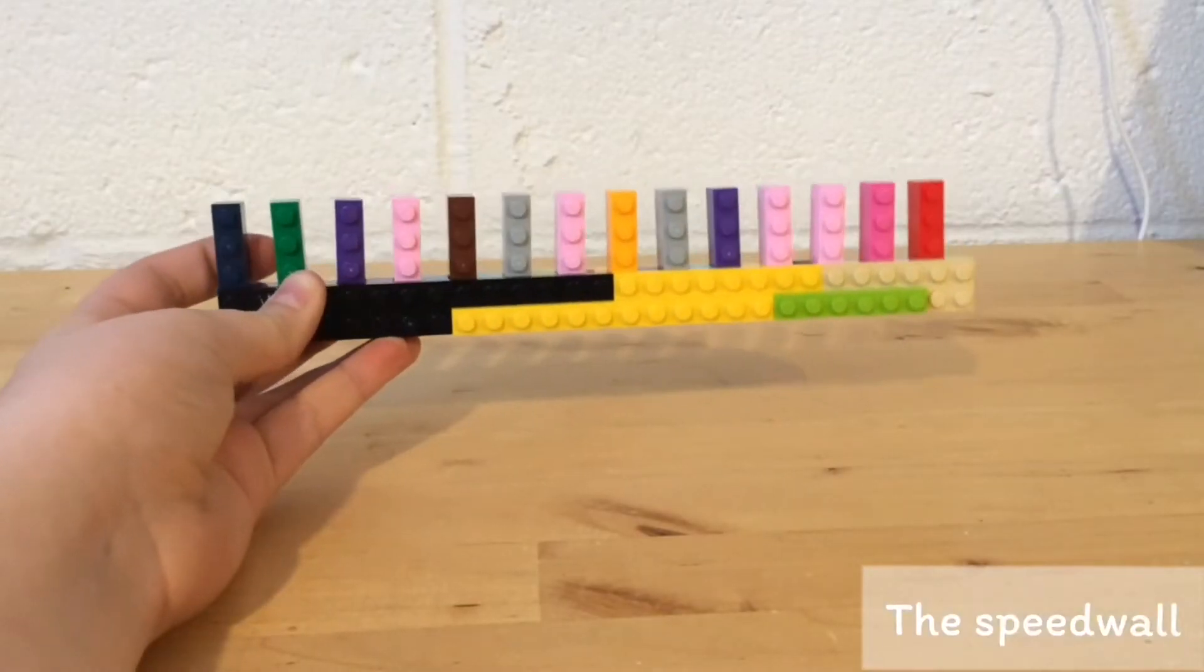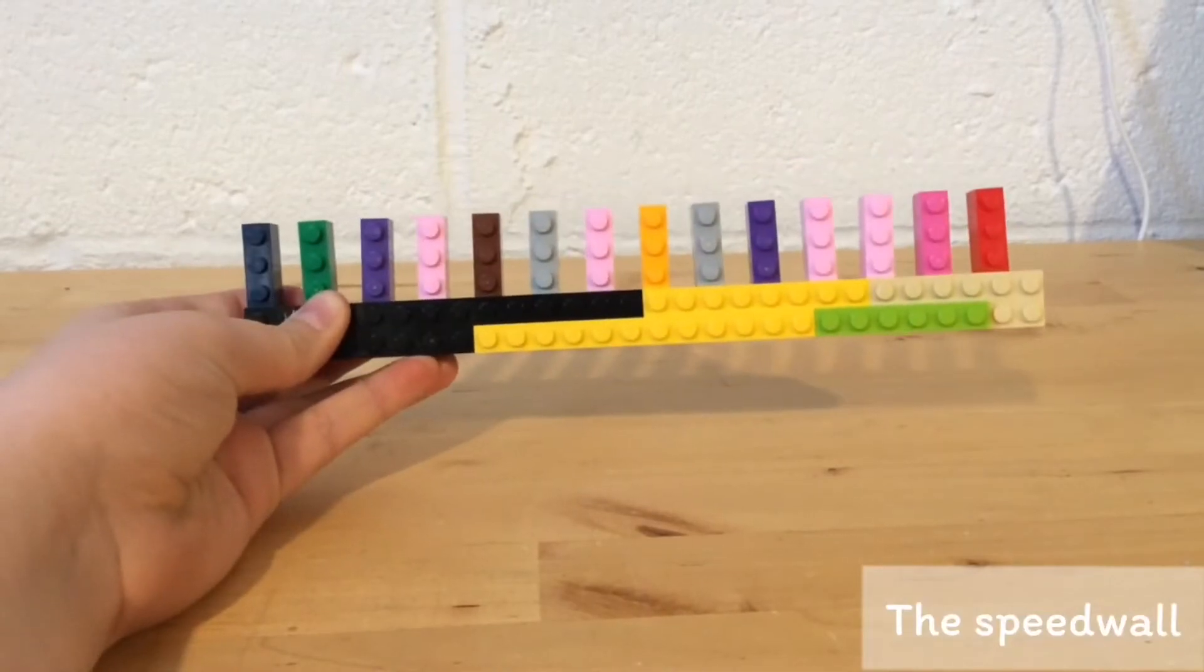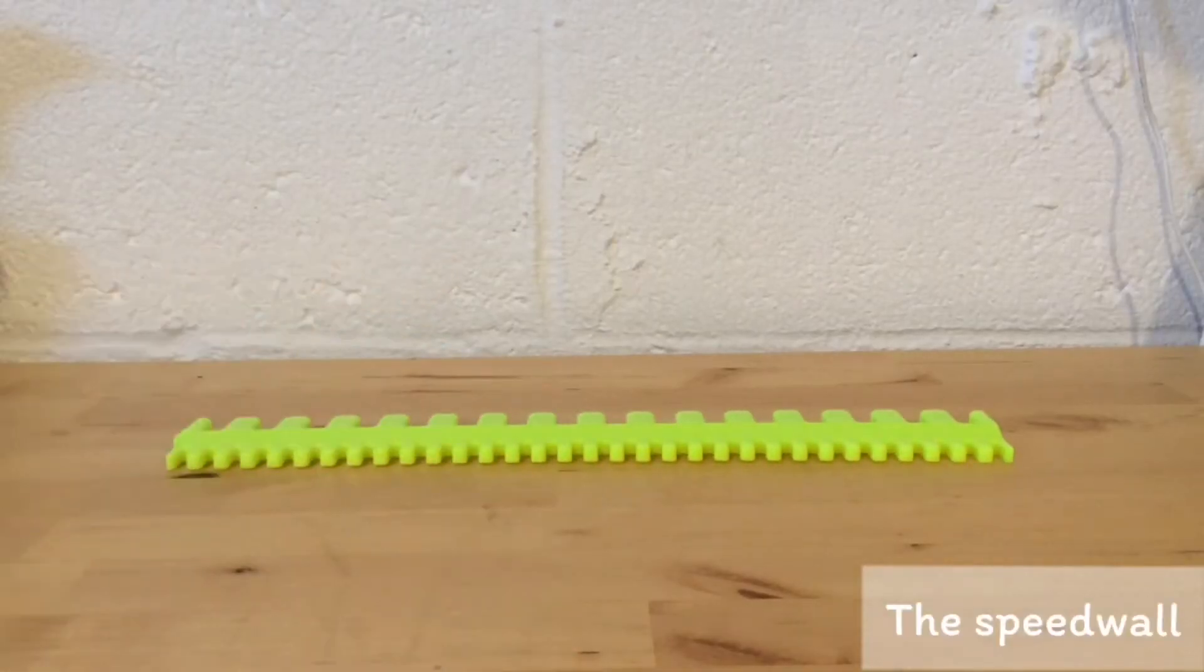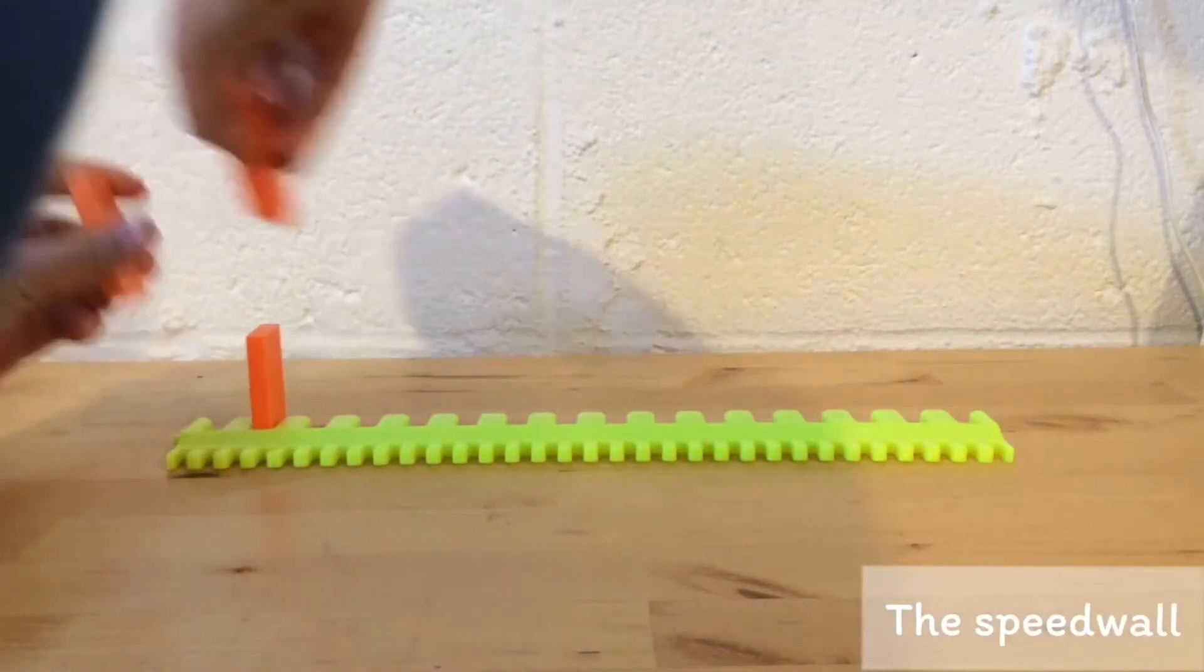If you're making your own, it's important that they're one stud apart per spacer. First thing you're going to want to do is place your spacer on the ground. You're going to want to fill every space of it with your dominos.